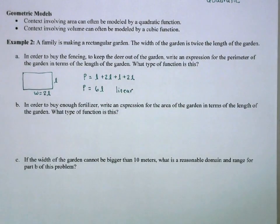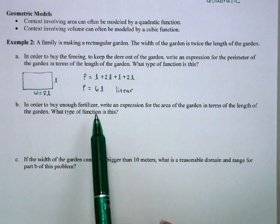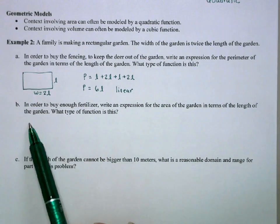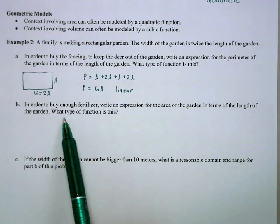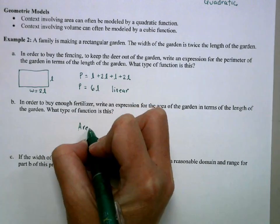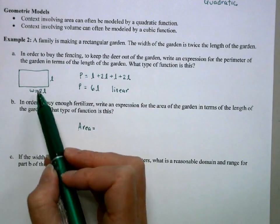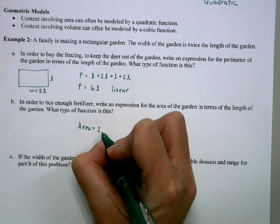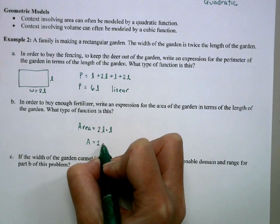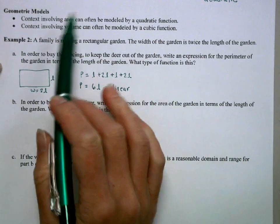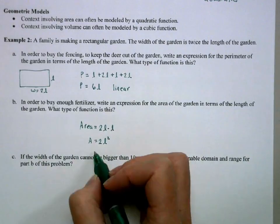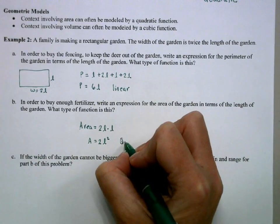Now we're going to fertilize the garden. Write an expression for the area in terms of the length. Area is base times height, so that's 2L times L, which equals 2L squared. Just like our earlier statement, involving area ends up giving us a quadratic function.